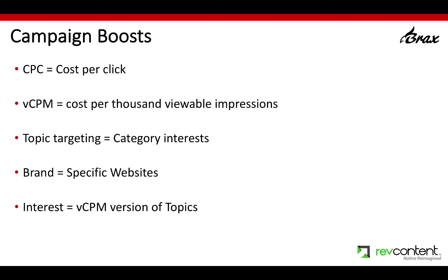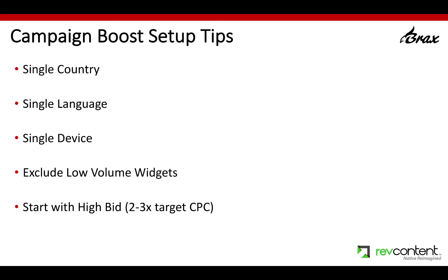They are different than category interests. So when you select those different options in Brax or in RevContent, you will see a different dropdown list of options. A few quick tips when you're setting up a campaign boost: always target a single country, target a single language, and target a single device. I also recommend excluding low-volume widgets because you're just testing and you probably only want things from the bigger sites. Start with your bid two to three times higher than your target CPC so that you get data and start showing up on premium sites to see if they'll work for you and you get a high enough CTR.